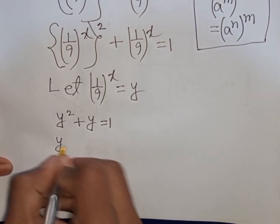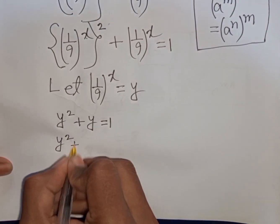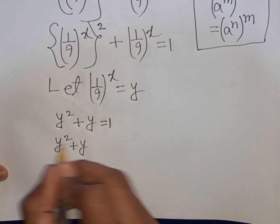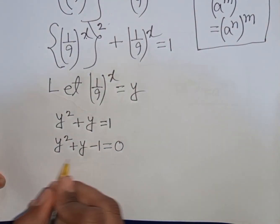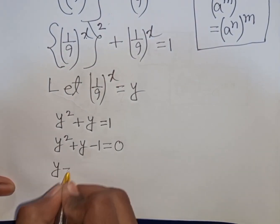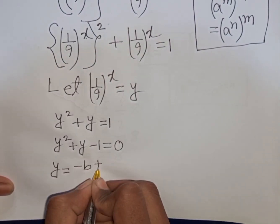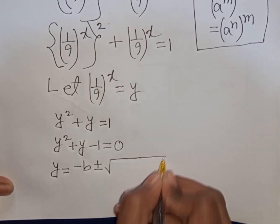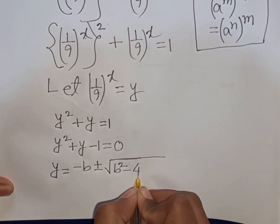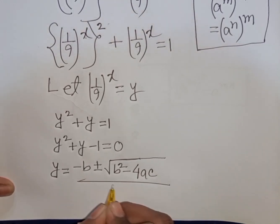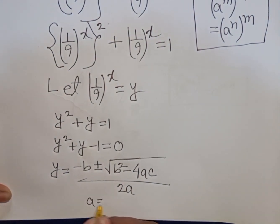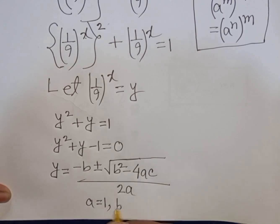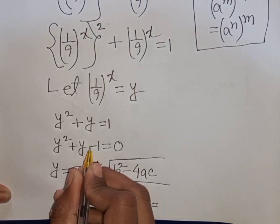We can write y squared plus y, then take plus 1 to the left side, so this becomes minus 1, giving y squared plus y minus 1 equals 0. Now we apply the quadratic formula: y equals minus b plus or minus square root of b squared minus 4ac, divided by 2a. Here A equals 1, B equals 1, and C equals negative 1.